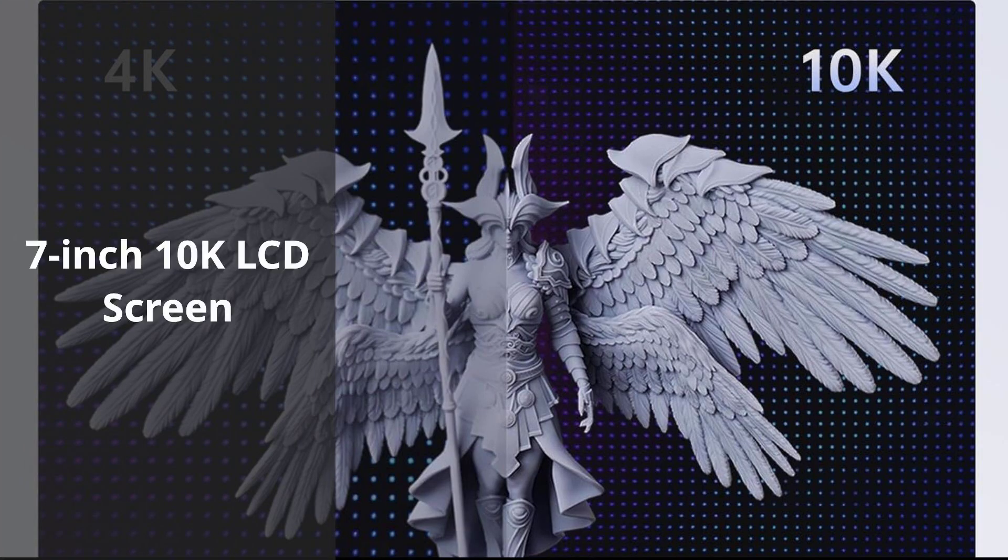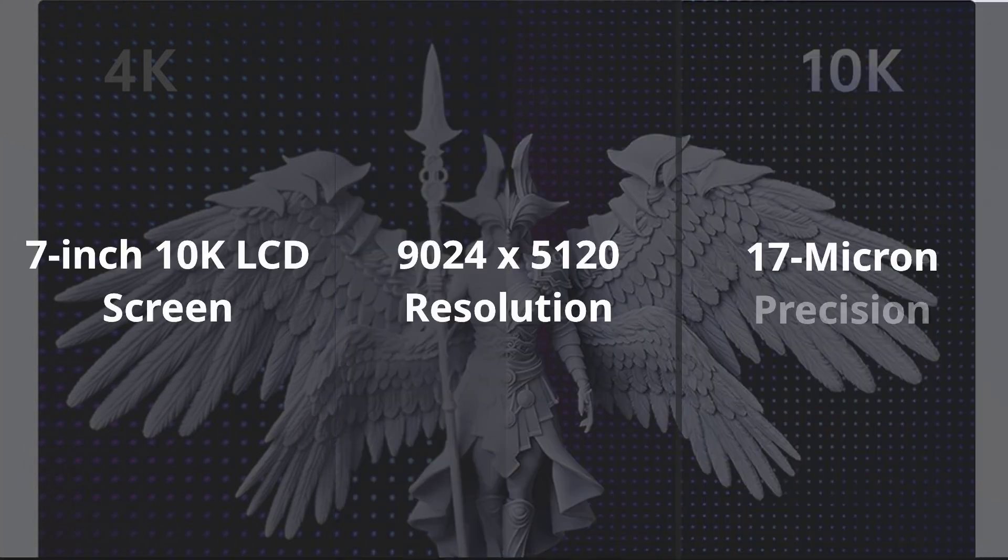The Photon Mono 4 features a 7-inch 10K monochrome LCD screen, delivering an incredible resolution of 9024x5120 pixels. That gives you pixel sizes as tiny as 17 microns, with over 105% more precision compared to the previous Mono 2.